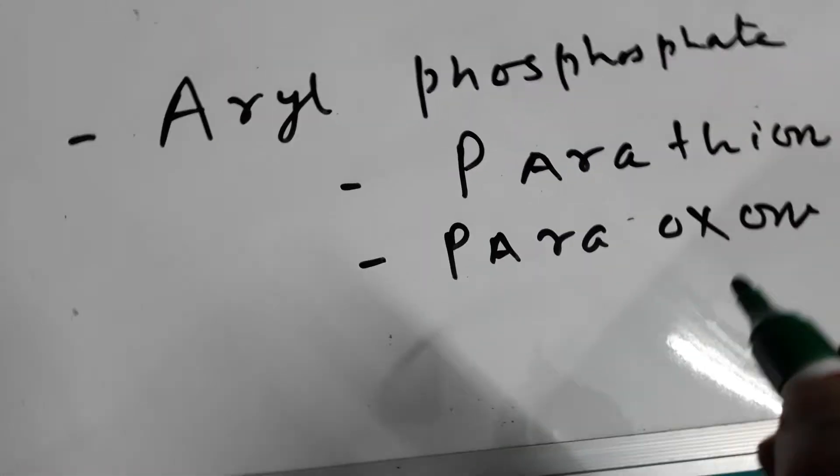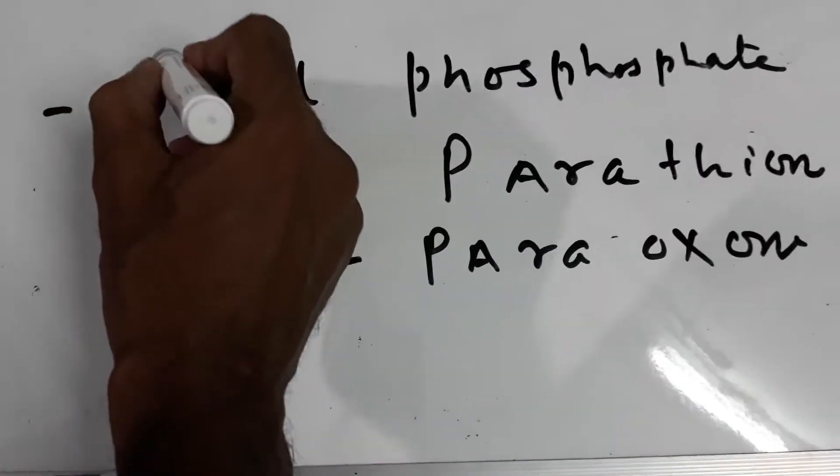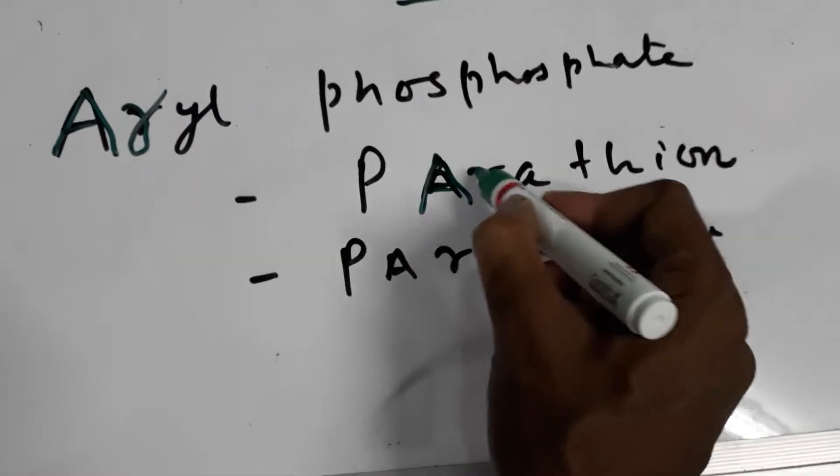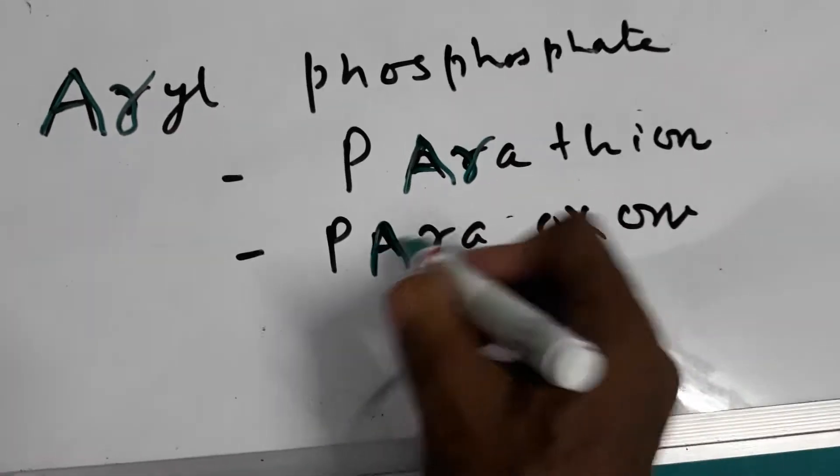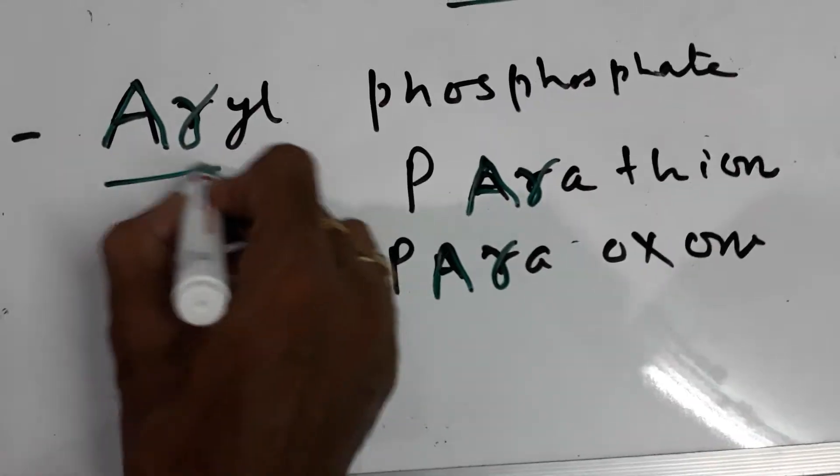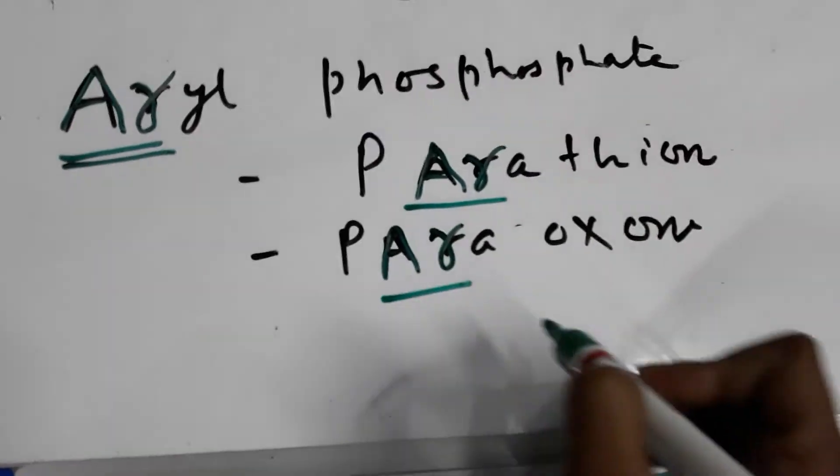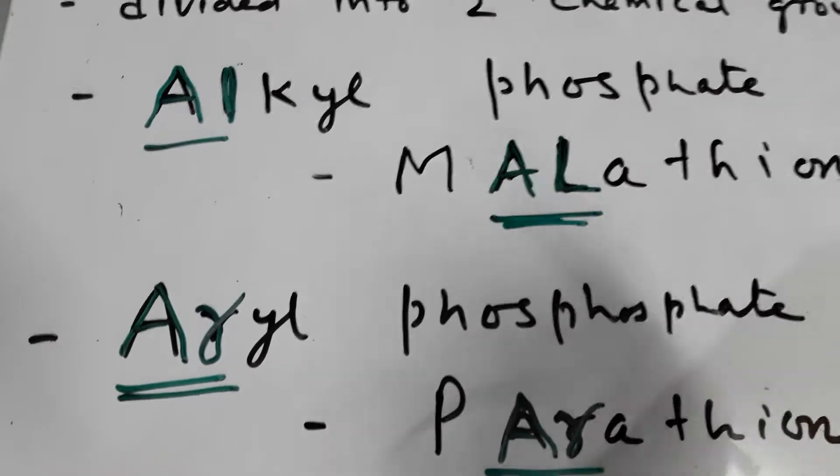For Aryl-phosphate, you can remember as here is A and R. In Parathion also is A and R, and Paraoxon also A and R. So in Aryl-phosphate, AR is there in both, and in Alkyl-phosphate and Malathion also AL is there.